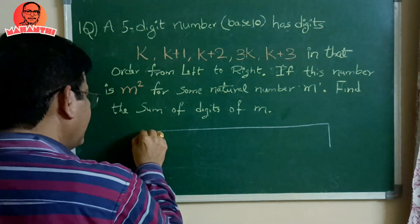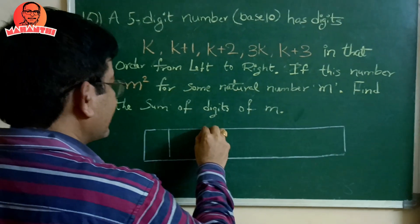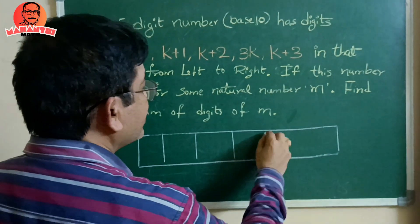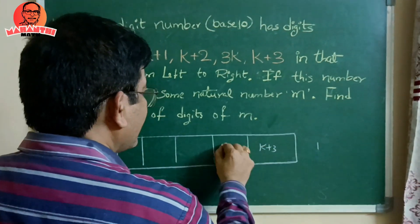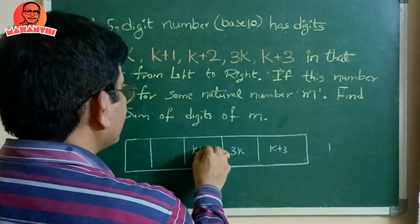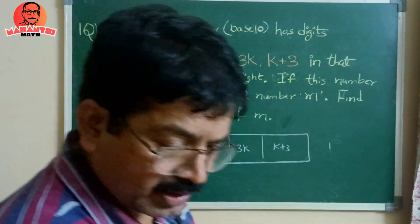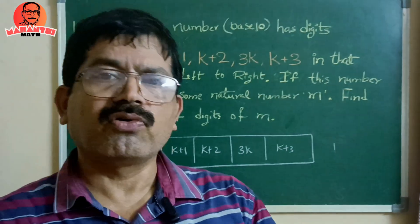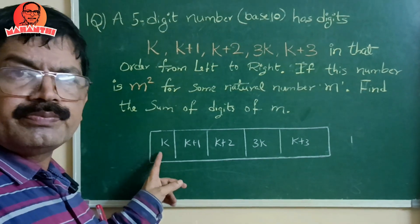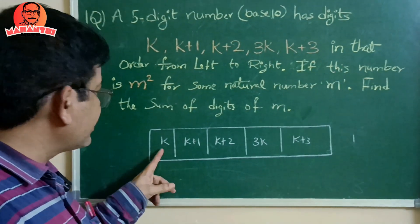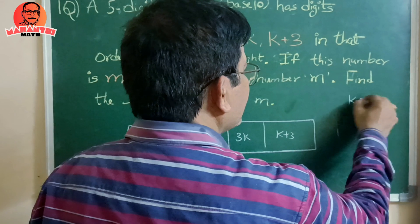With just two properties of perfect squares we can solve this. We write the digits: k (ten-thousands), k+1 (thousands), k+2 (hundreds), 3k (tens), k+3 (units). Digits can be 0 through 9, but k cannot be 0 because then it would not be a five-digit number. So note: k ≠ 0, meaning k ranges from 1 to 9.